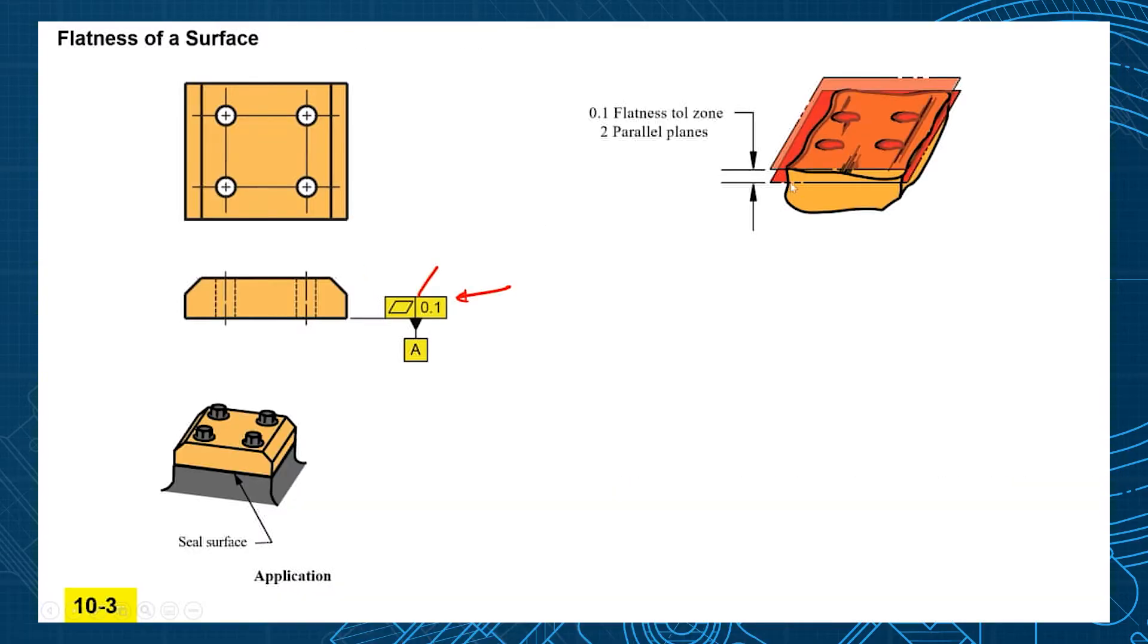In 3D you have your ugly looking surface that has some variation in it and you maintain that variation with those two parallel planes in 3D space. That's going to control how concave the surface could be, how convex the surface could be and also how wavy that surface could be.